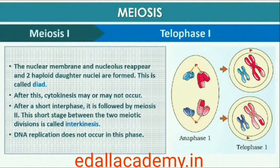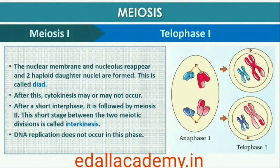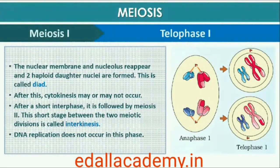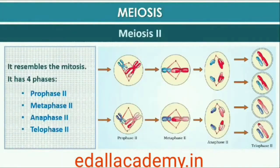Although in many cases the chromosomes do undergo some dispersion, they do not reach the extremely extended state of the interphase nucleus. The stage between the two meiotic divisions is called interkinesis and is generally short-lived. Interkinesis is followed by prophase II, a much simpler prophase than prophase I.